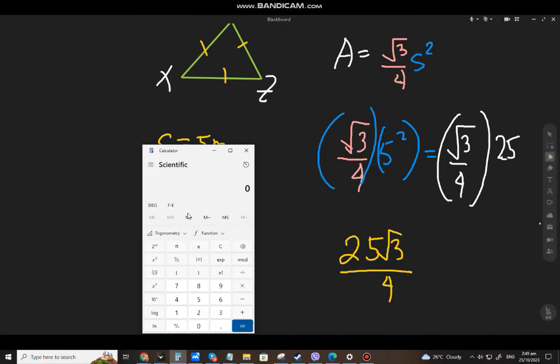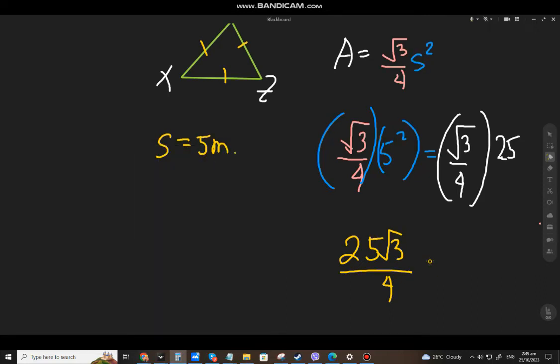You can do it in the calculator on the computer. 3 square root, that's it. Then you multiply it by 25, divide it by 4, and there you have it. So 10.83, it's just 10.83.